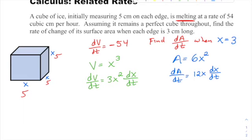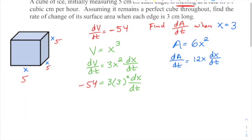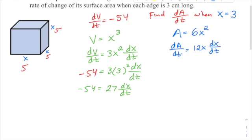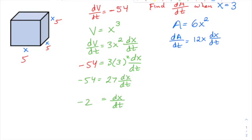So plugging in what I know: dV/dt is negative 54 equals 3 times my edge - and the edge is 3 - my edge squared times dx/dt. So 3 squared is 9, 9 times 3 is 27. We have negative 54 equals 27 dx/dt. These numbers are pretty nice actually, they don't always work out to be. Divide both sides by 27, and we get dx/dt is negative 2 at this moment when x is 3.